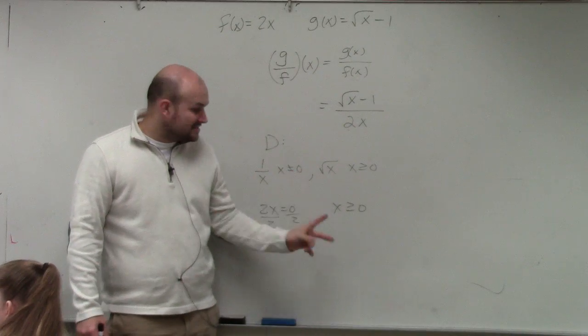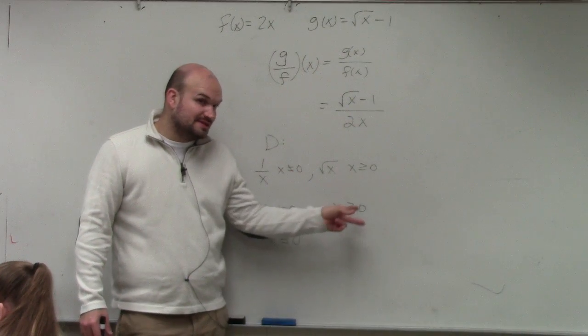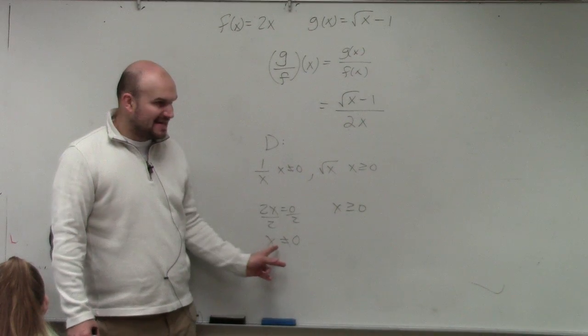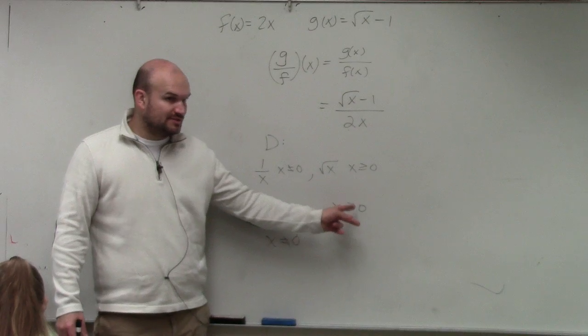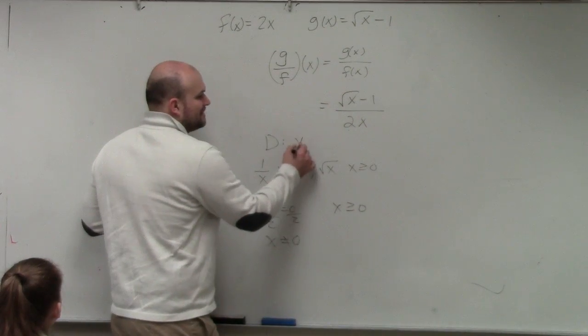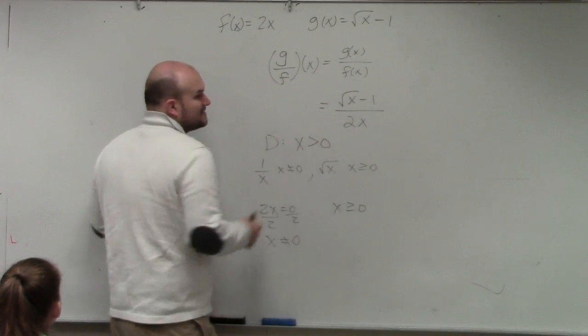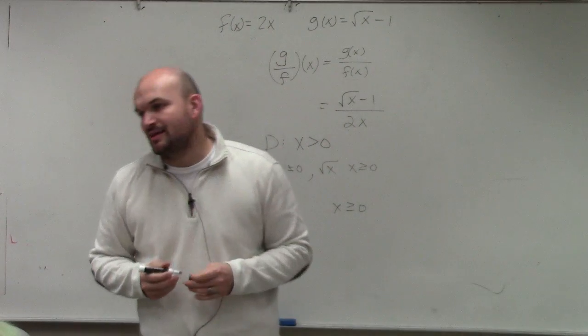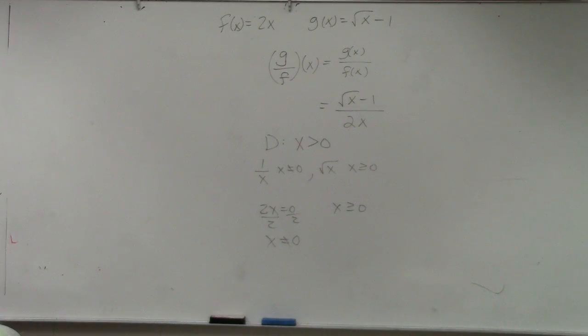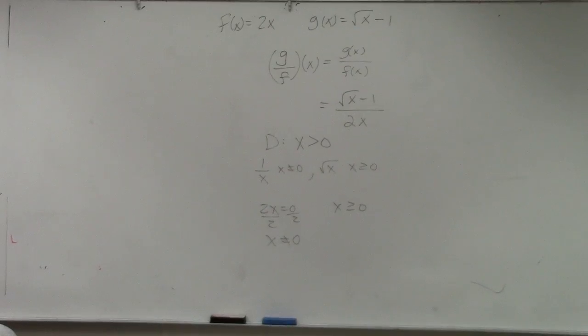However, so now we have two constraints. x has to be greater than or equal to 0, and x cannot equal 0. Well, so therefore, if x can't equal 0, can it be greater than or equal to? No. So now your domain is just going to be x is greater than 0. You can't do the greater than or equal to, because x is also in your denominator. So therefore, x cannot equal 0.